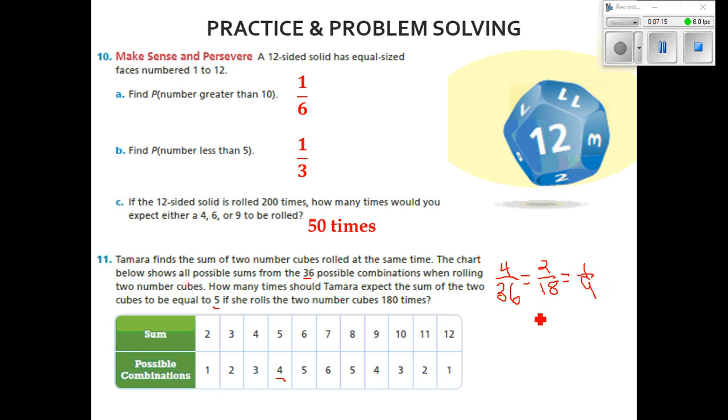Now we can take 1 over 9 and cross-multiply it to some number over 180. Remember, the X is going to be symbolizing the number of times we feel it will roll 5 out of 180.